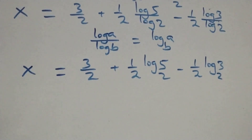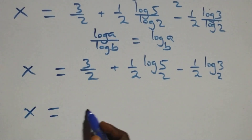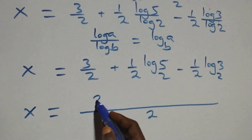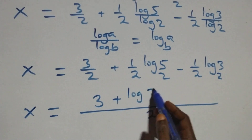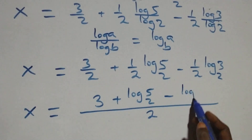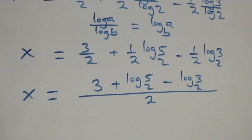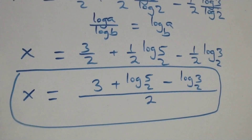Then here we bring this together as a fraction. We have x equals to 3 plus log 5 base 2 minus log 3 base 2, all over 2. Let's check here if this satisfies the given problem.